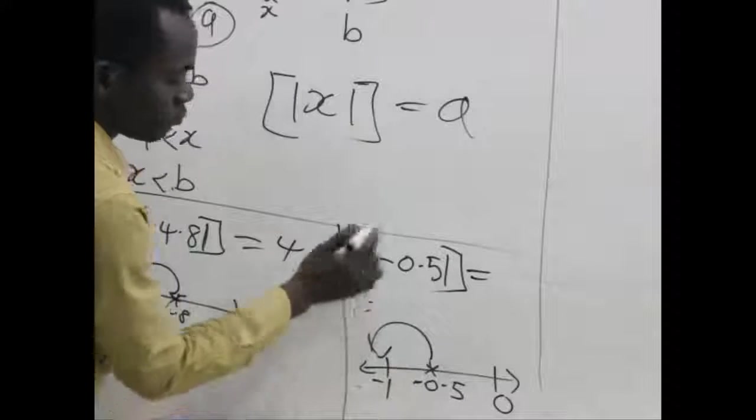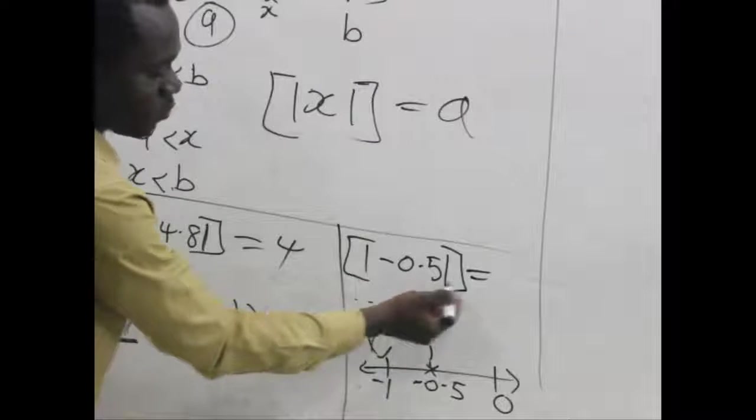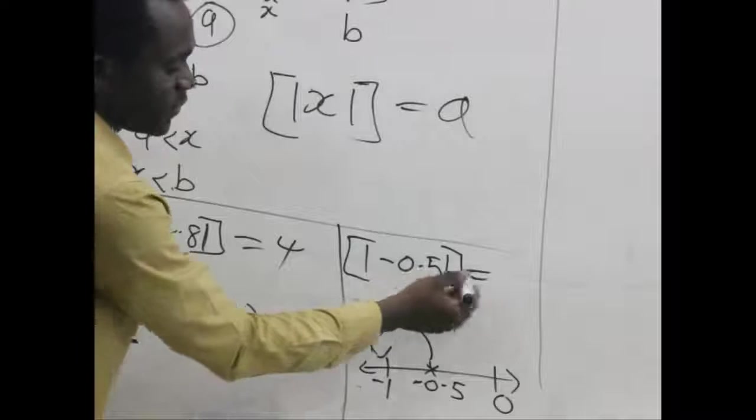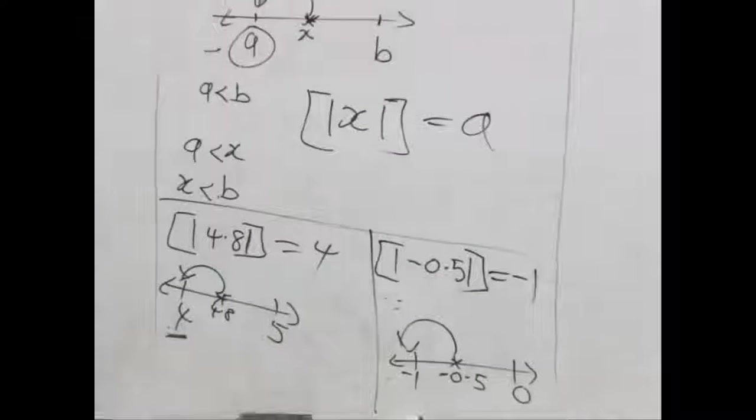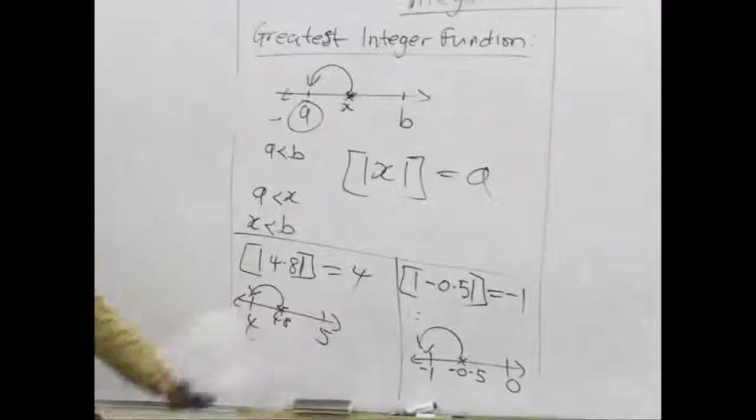So we move a step backwards which falls on negative 1. So our value for greatest integer function for negative 0.5 is negative 1. So as simple as that, we can explain the concept of greatest integer function. Let's take a graph of greatest integer function.